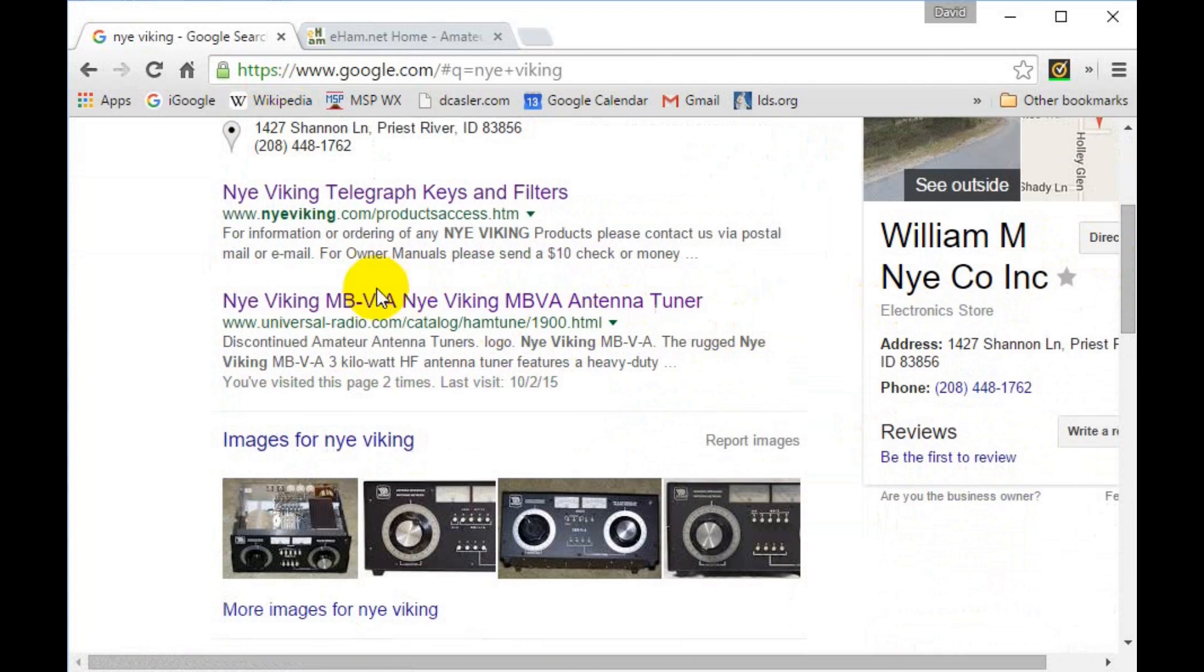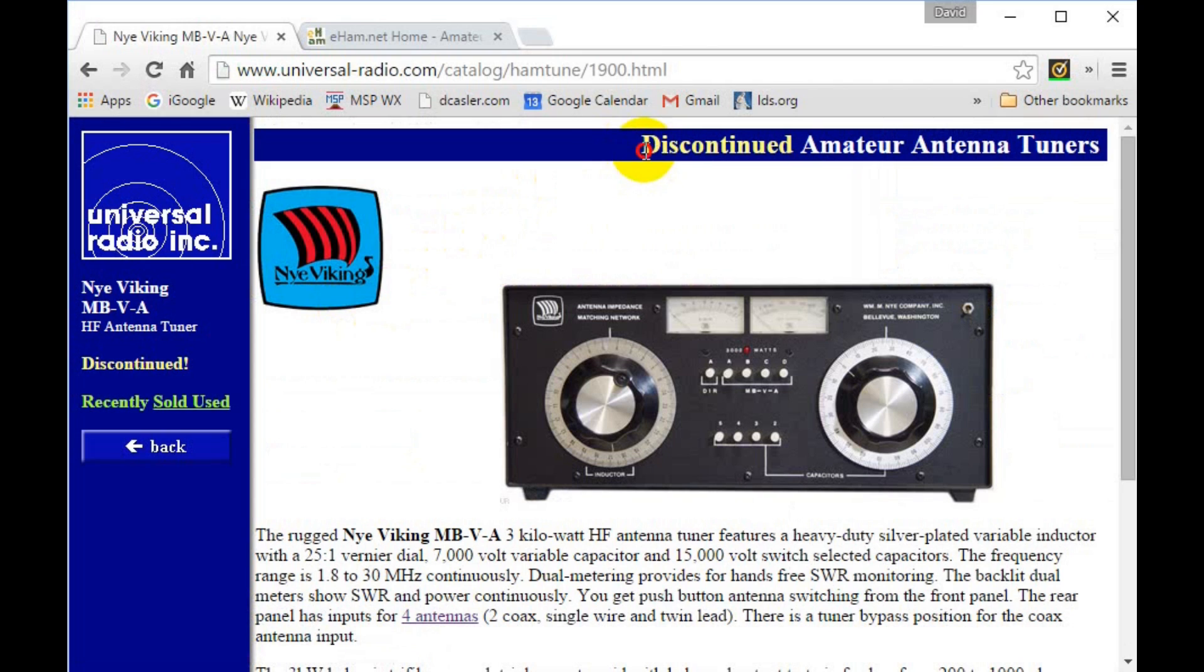Now here's an interesting link at Universal Radio for a discontinued product. We click through to find the very model we're looking for. Down here we read that there are four possible antenna connections: two for coax, one for a long wire, and another for balanced line.